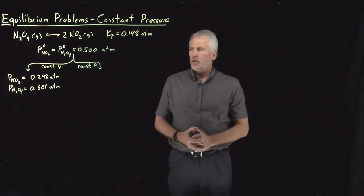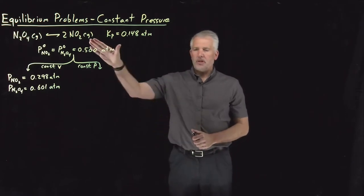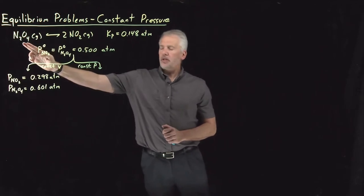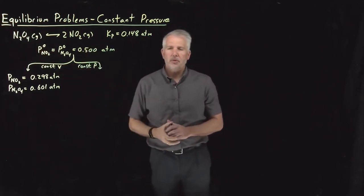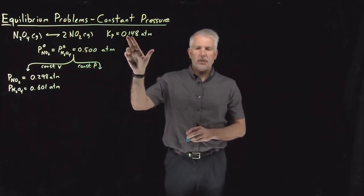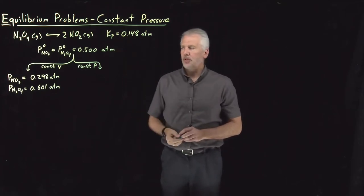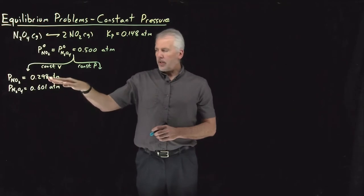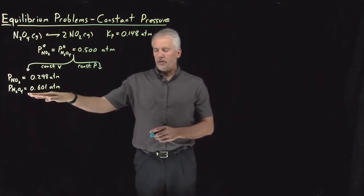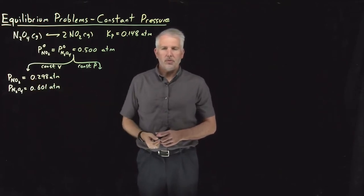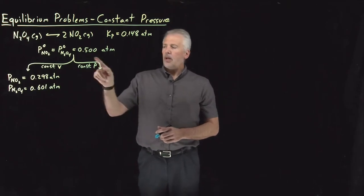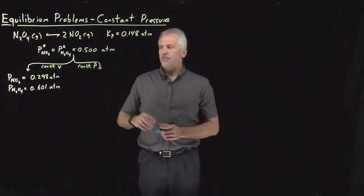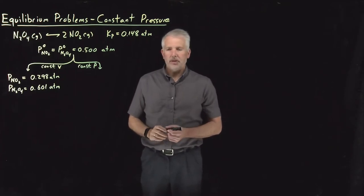Let's take one more attempt at this particular equilibrium problem: dissociation of N2O4 into NO2 at 298 Kelvin, where it has this equilibrium constant denominated in terms of pressures. Previously, when we worked that problem at constant volume, we got a certain amount of N2O4 and NO2 at equilibrium. When we do things at constant pressure, the answer is a little bit different for reasons we'll be able to understand.